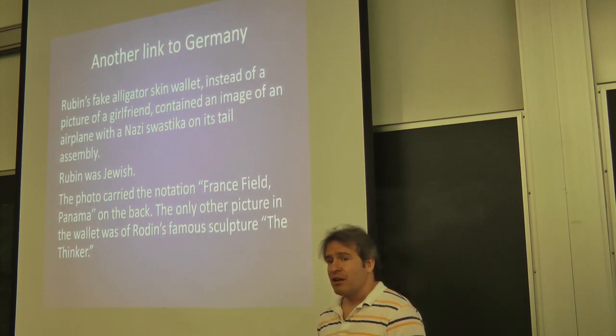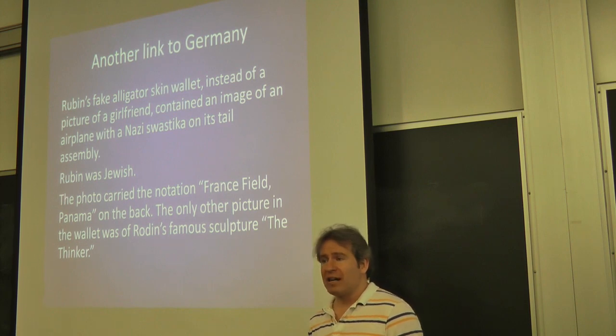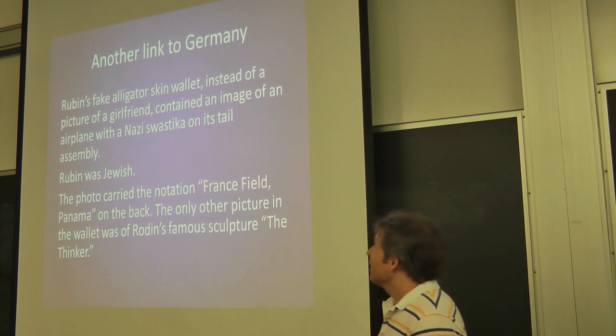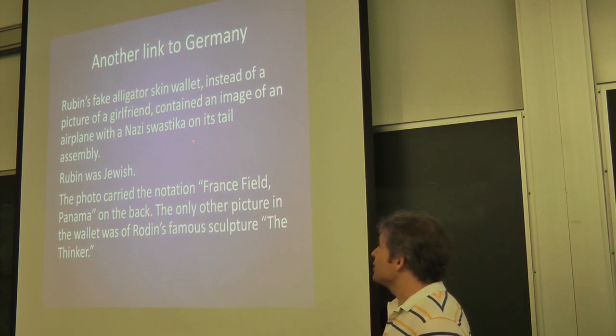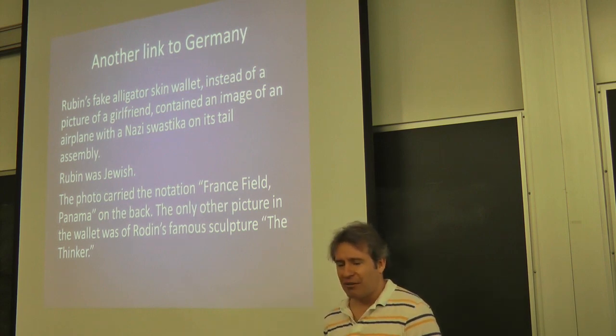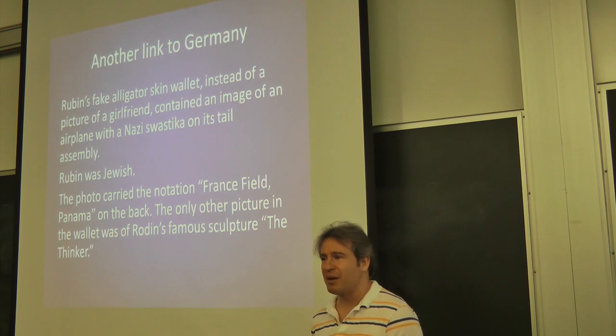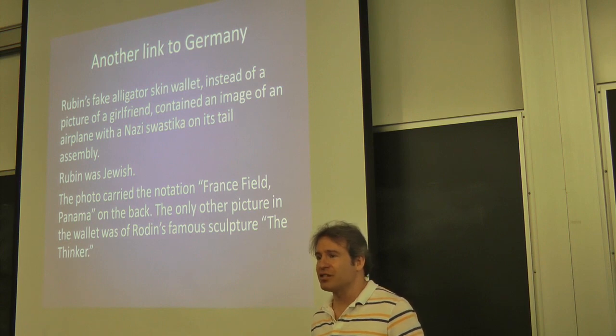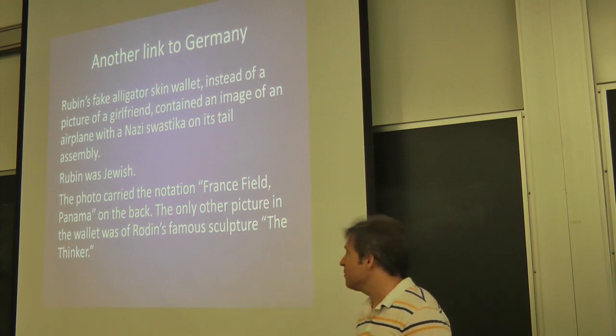So another link to Germany. Rubin, instead of in his wallet having a picture of a girlfriend or something like that, has a picture of an airplane with a Nazi swastika on its tail assembly. And he was Jewish. So that's hard to understand. Why would a Jew be walking around with a picture of a Nazi aircraft in his pocket after World War II, when he knows about the concentration camps and all the horrors. It's not something that would seem very appealing.